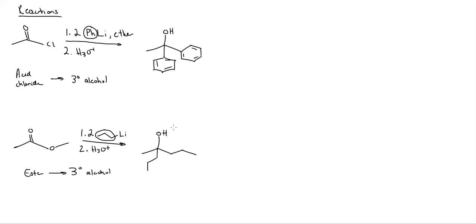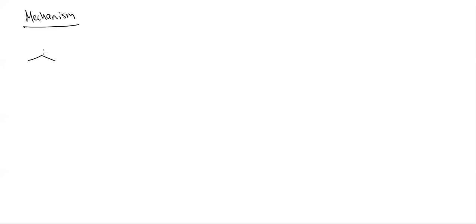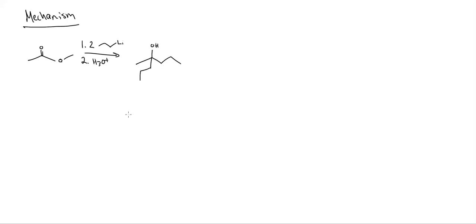In the last video I promised we would do a mechanism with an ester, so we are going to do that mechanism now. This mechanism is basically the same as the acid chloride, but just slightly different. I'm starting with this ester, and I add two equivalents of the organolithium and then throw in some acid. This gave me this three degree alcohol — that's my product. I add twice.